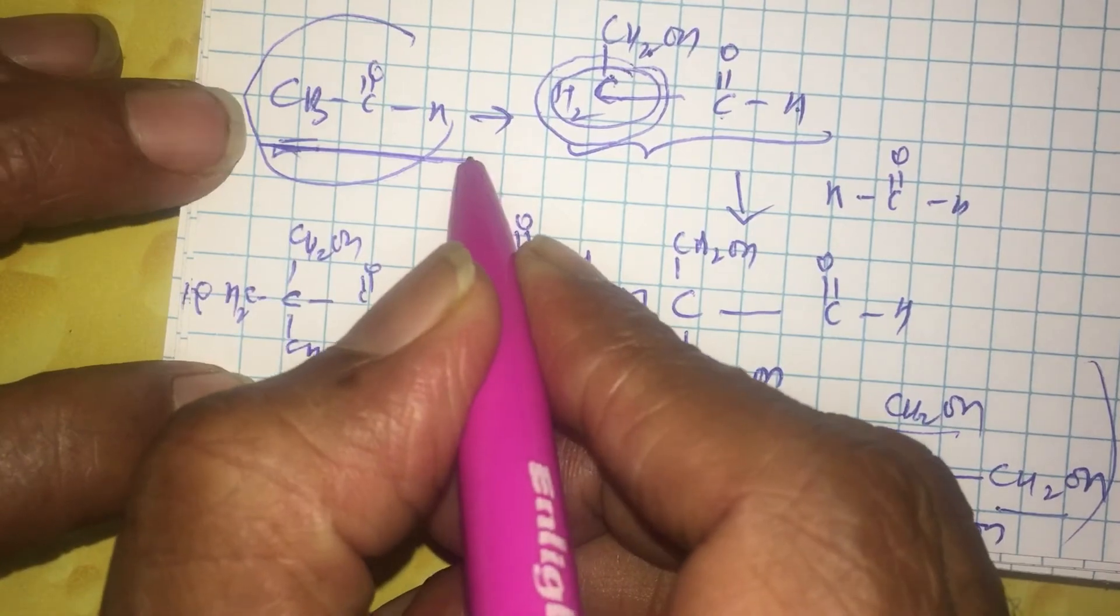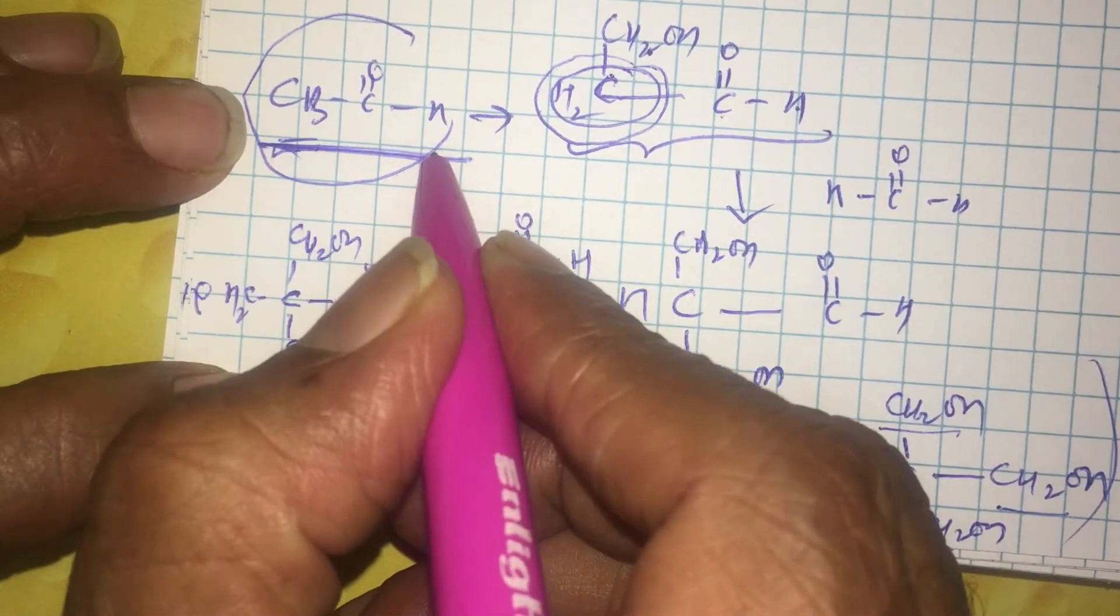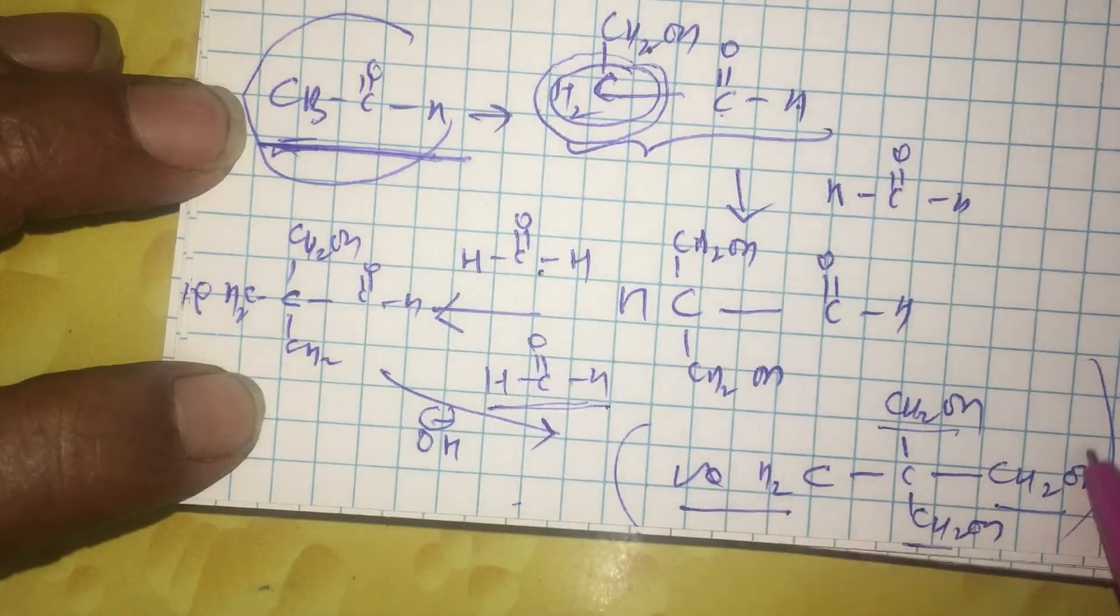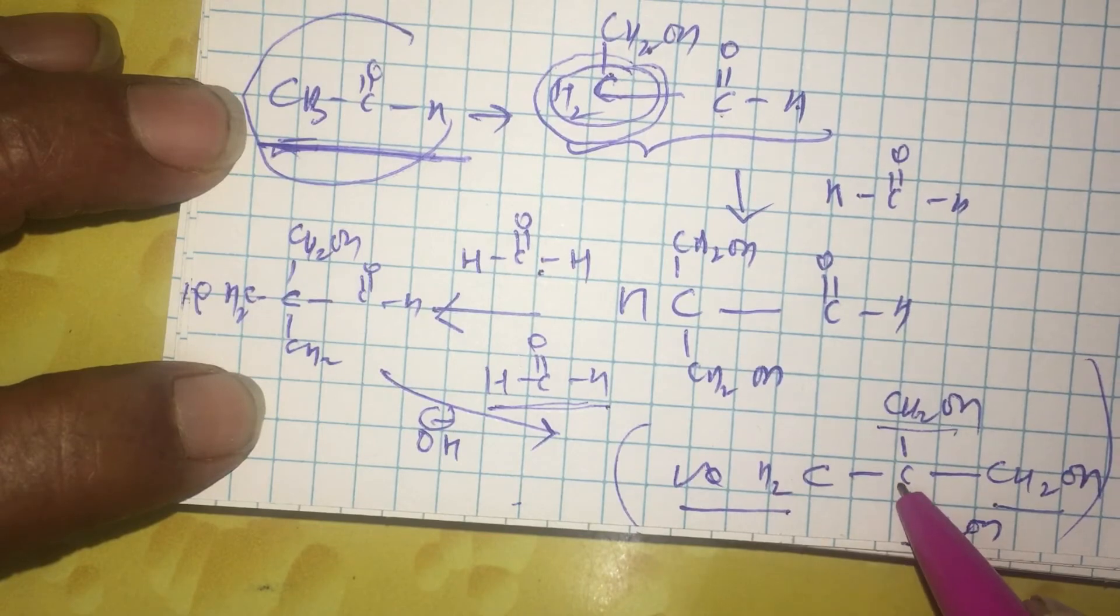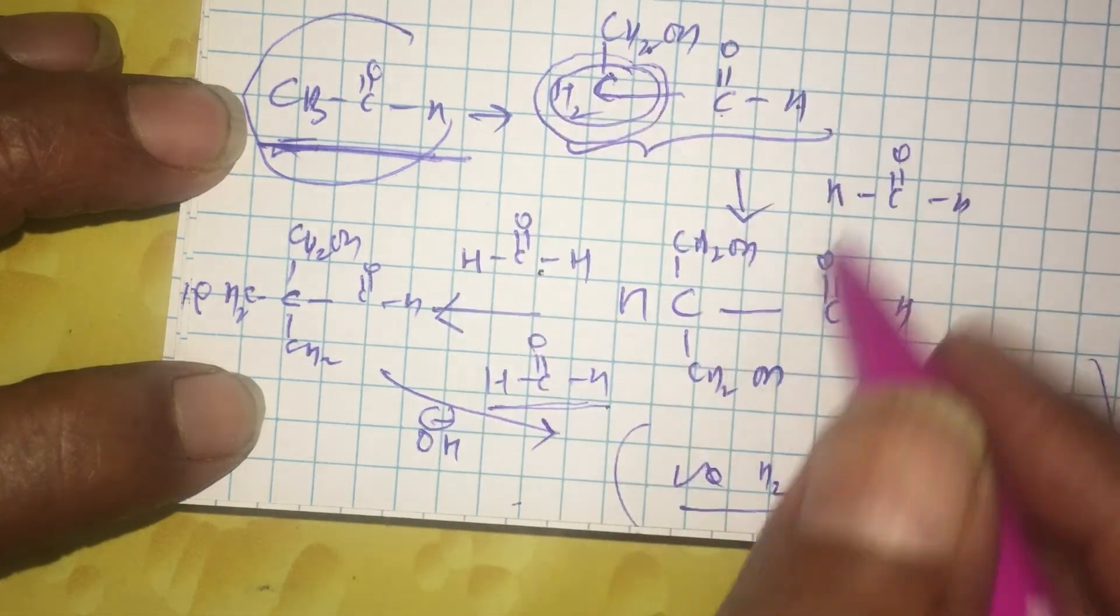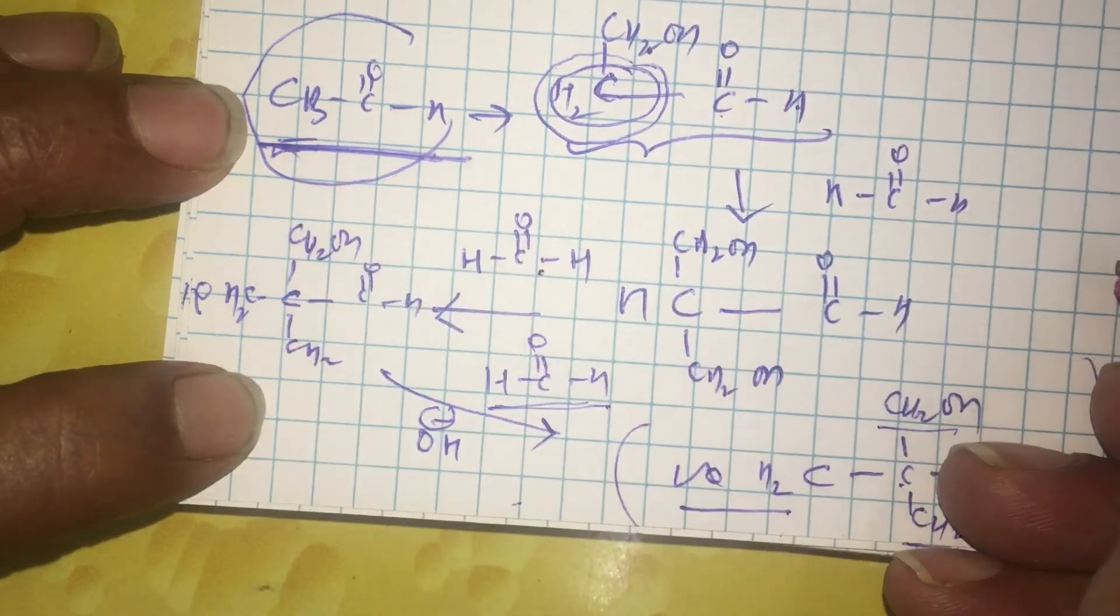In a basic medium, one mole of acetaldehyde in order to give a final product, pentaerythritol, how many moles of formaldehyde is reacting? Answer is five.